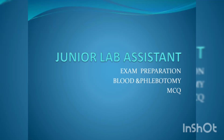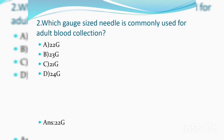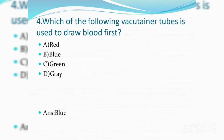Junior lab assistant exam preparation: blood and phlebotomy MCQs. Question 1: Which of the following veins is most suitable for blood collection in adults? Answer: Median cubital vein. Which gauge-sized needle is commonly used for adult blood collection? Answer: 22 gauge. In blood bank, which gauge-sized needle is used? Answer: 16 gauge. Which vacutainer tube is used to draw blood first? Answer: Blue-colored vacutainer.